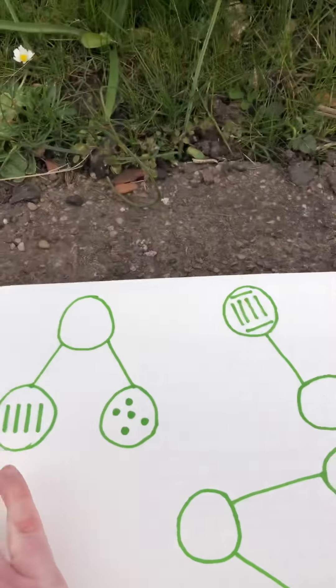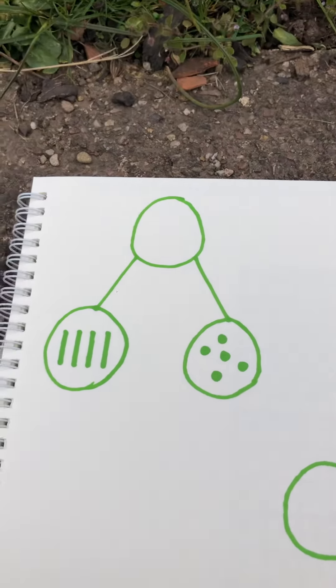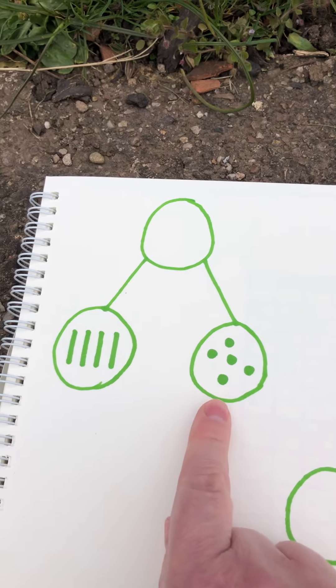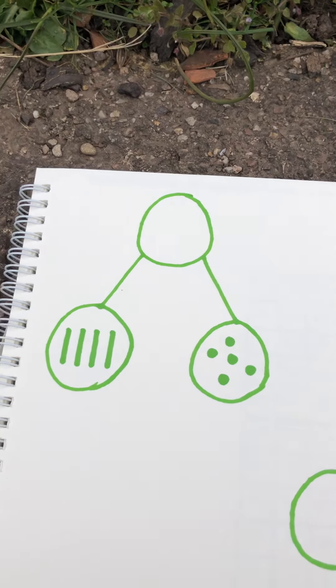Now, we can also challenge ourselves to do it this way. So you can get a grown-up to draw the rods and 1's for you, and then you have to work it out. So let's have a look at this one together.